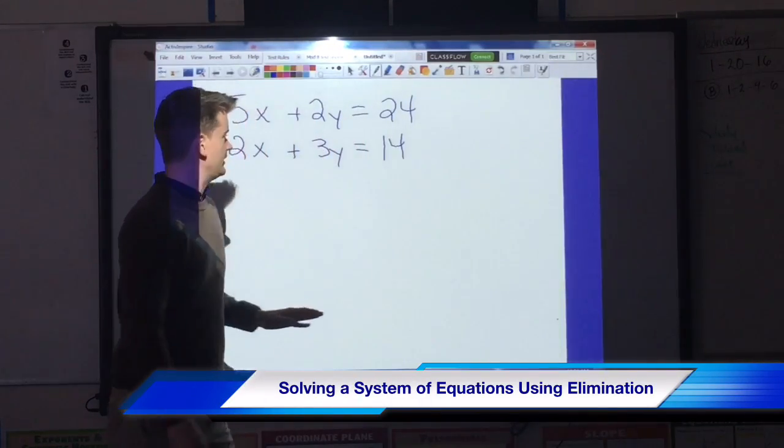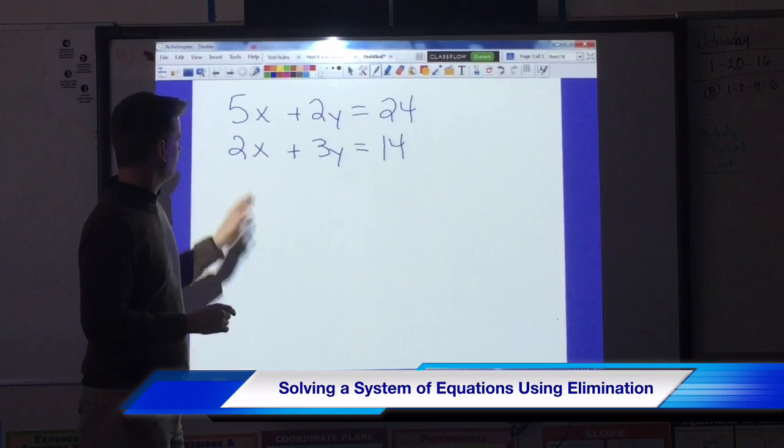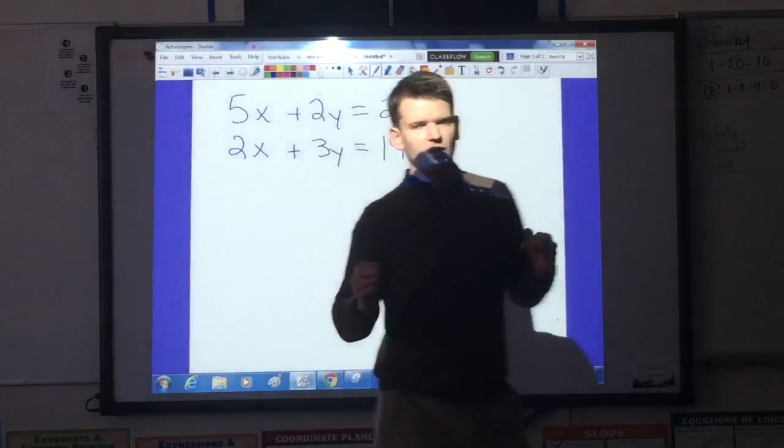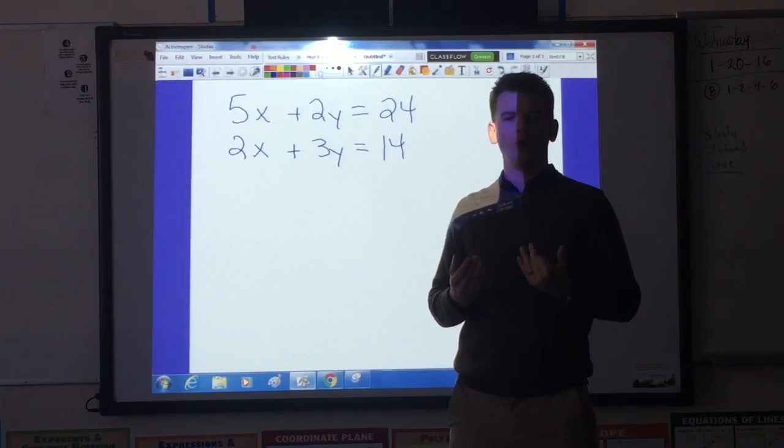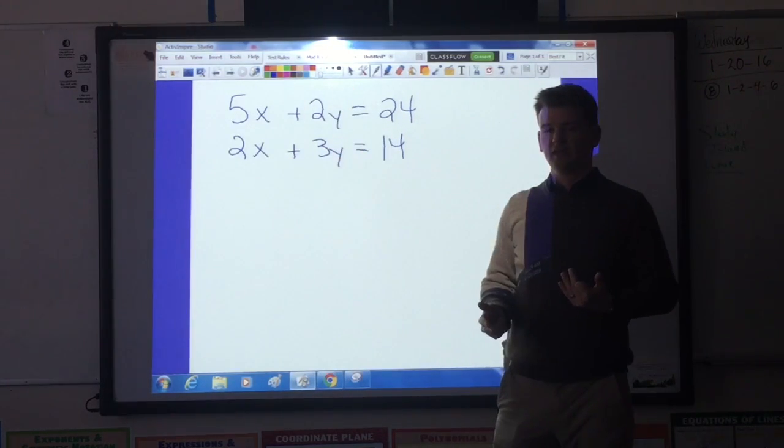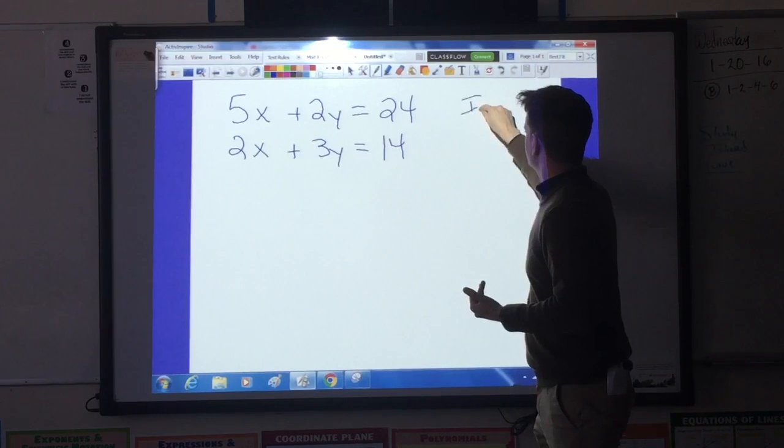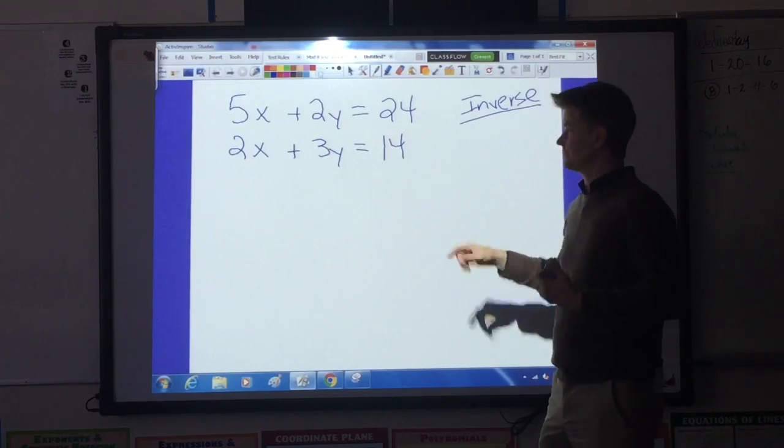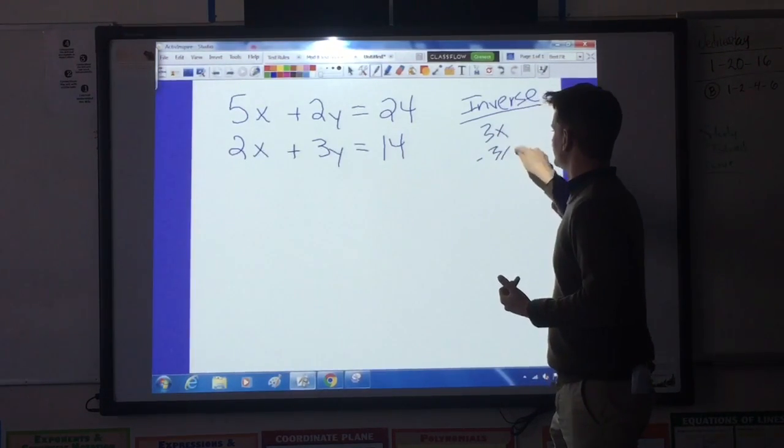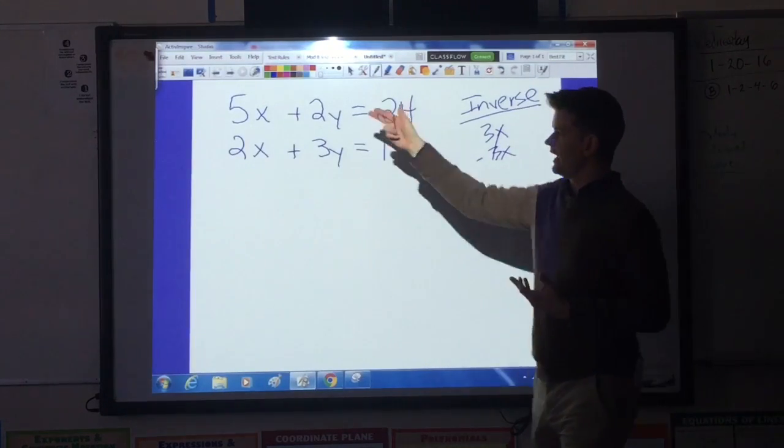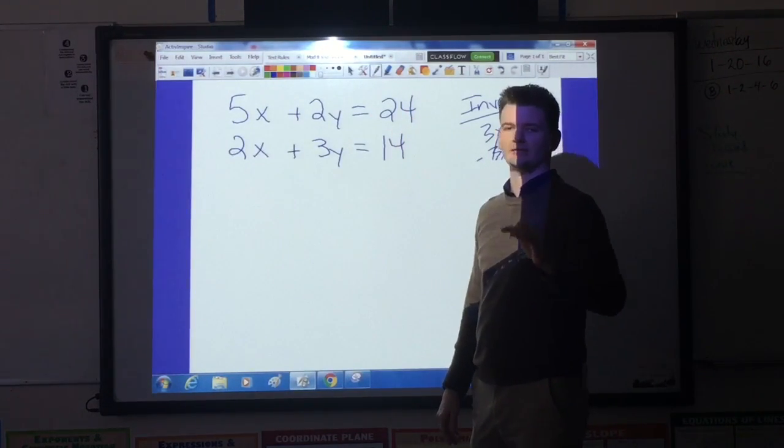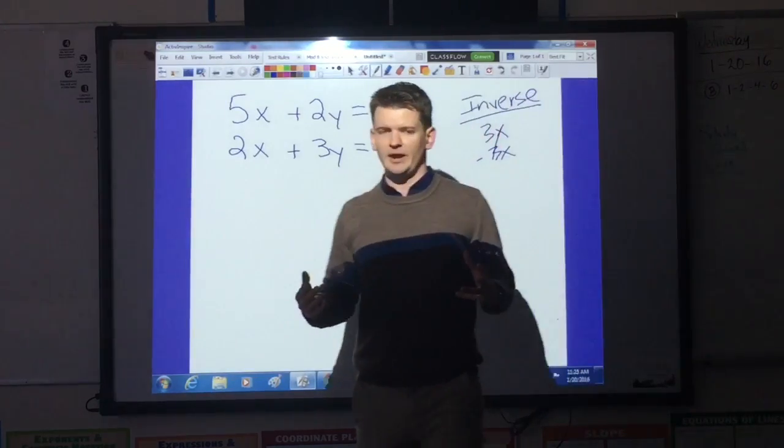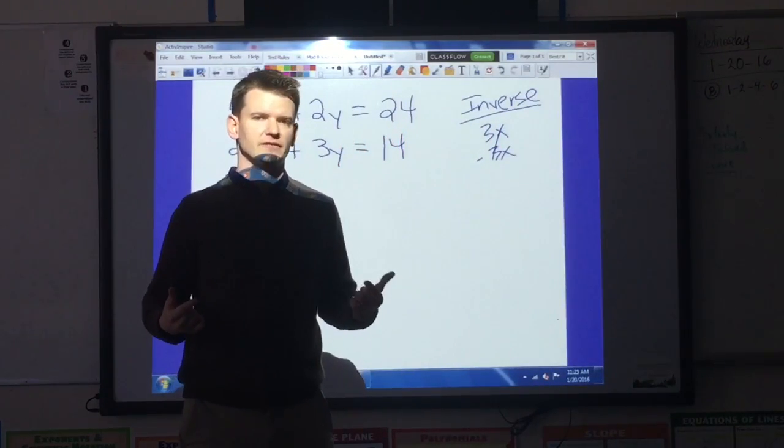Alright, let's get to solving this equation right here. We have 5x plus 2y equals 24, and 2x plus 3y equals 14. When I'm solving a system of equations, the first thing I want to be able to do is cancel out one of the variables, either the x or the y. In order to do that, I need something known as inverse coefficients. Inverse means opposite. So I need something like a positive 3x and a negative 3x in order to cancel them out. Looking at my equation right now, I don't have inverse coefficients. The good thing is, using a little math, a little multiplication, I can create those inverse coefficients.